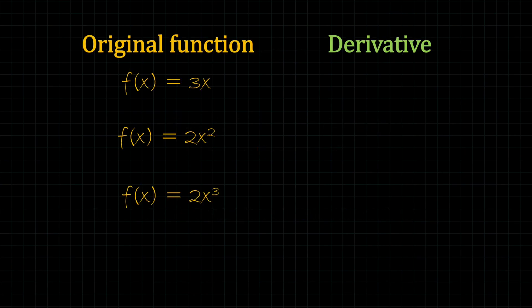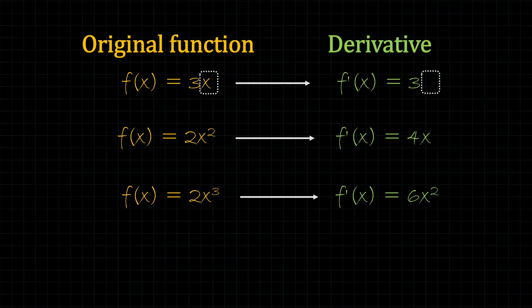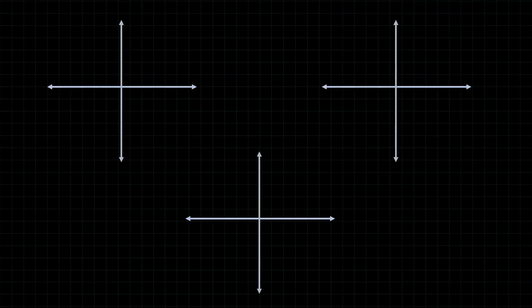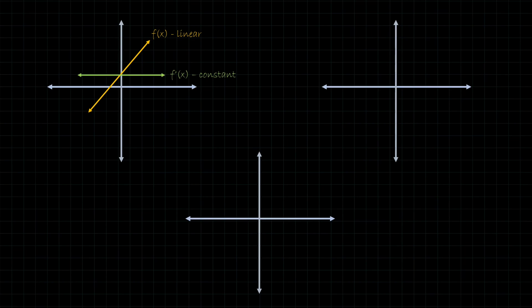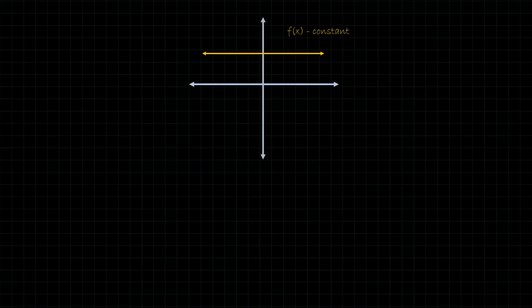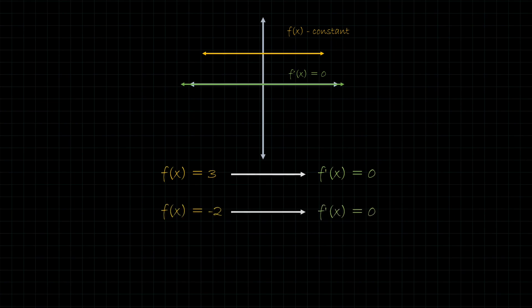There's also a pattern with derivatives and their original functions. The derivative is always one degree lower than the original function. So if the original function is linear, the derivative is constant — meaning the slope is the same at all points. If the original function is quadratic, the slope changes in a linear pattern. If it's a cubic function, the derivative is quadratic. And if the original function is a constant, the derivative is always 0, because the slope of a flat horizontal line is 0 — regardless of what the constant is.